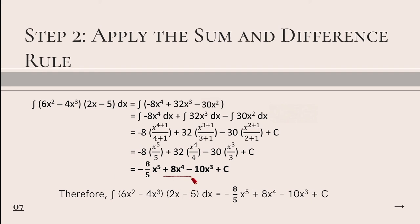So if we divide it, we will get 8x raised to the power of 4. And same goes to negative 30x cubed all over 3. Dividing it, we get negative 10x cubed. Therefore, our final answer is negative 8 over 5, x raised to the power of 5 plus 8x raised to the power of 4 minus 10x cubed plus c. And this is the integration for the given problem.